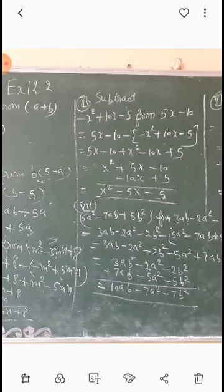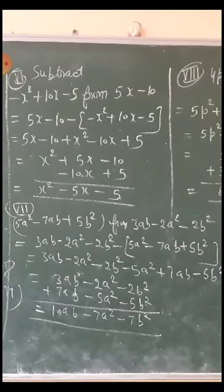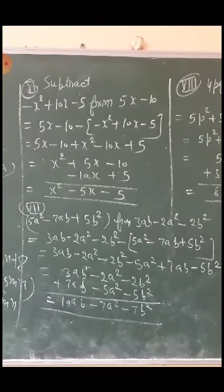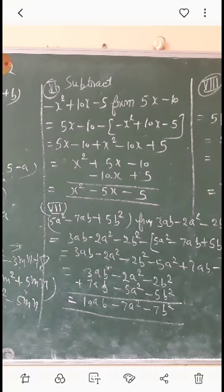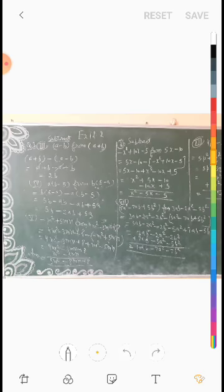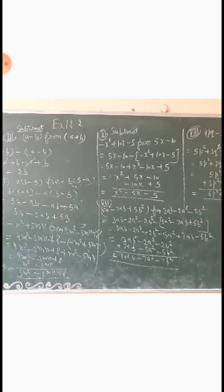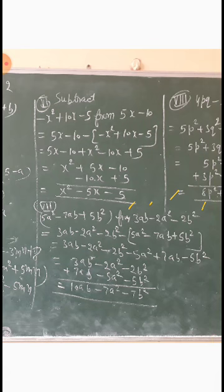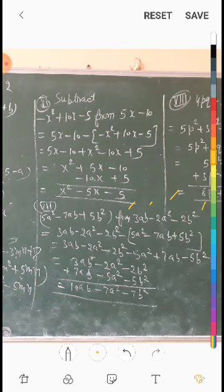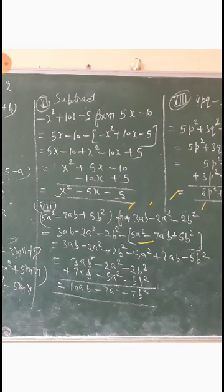Exercise 12.2, question number 3, seventh part. Subtract 5a² minus 7ab plus 5b² from 3ab minus 2a² minus 2b². तो पहले हम 3ab minus 2a² minus 2b² लिखेंगे, क्योंकि इसमें से subtract करना है 5a² minus 7ab plus 5b².